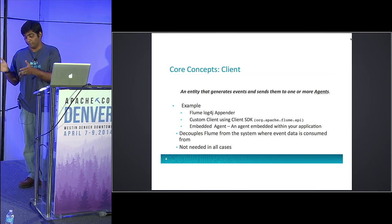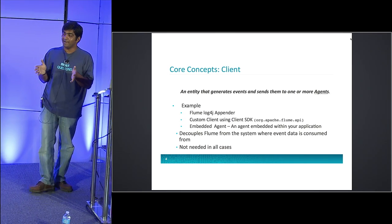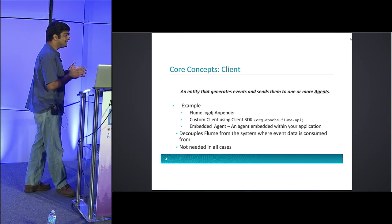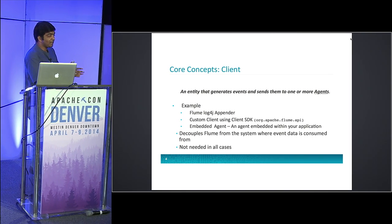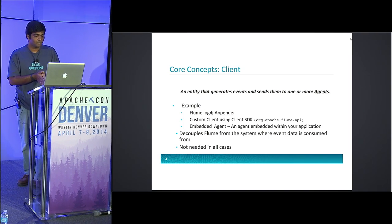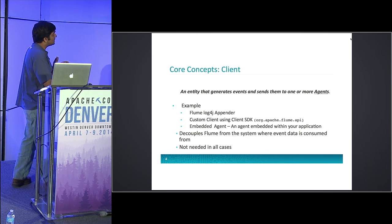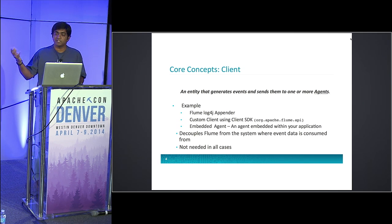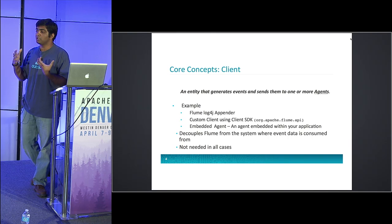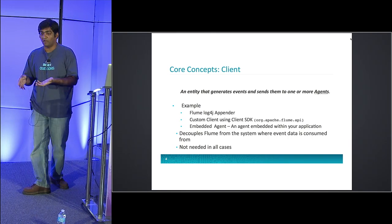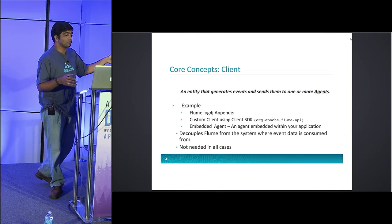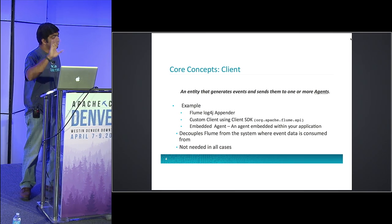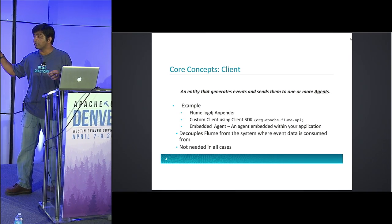If your Flume agent dies or the network goes down, as long as your embedded agent's channel is not full, it will take care of retries. The idea of a client is to decouple a Flume agent from the machine on which your application is running. You want to run your Flume agent on a different machine because you don't want to overload the machine on which your web server is running — your web server probably already takes up a whole lot of resources.